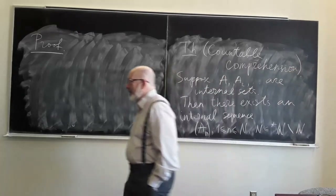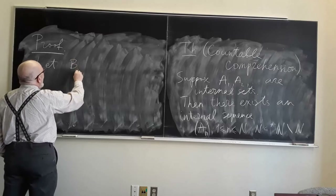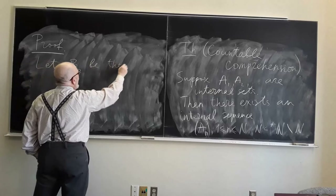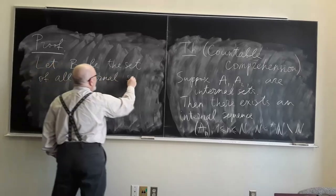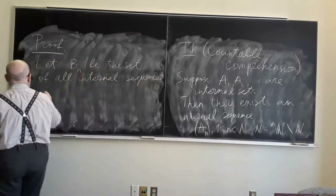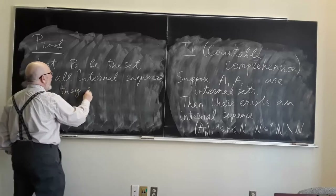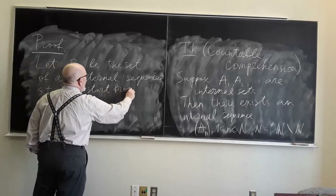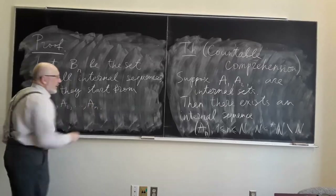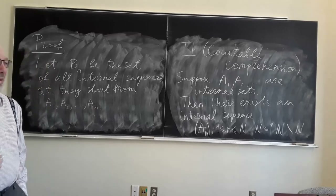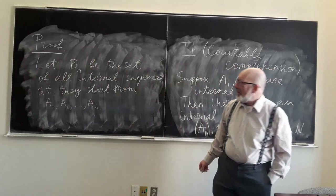If you take the first k terms A₁, A₂, ..., Aₖ and then repeat them periodically, this defines: let Bₙ be the set of all internal sequences that start from A₁, A₂, ..., Aₙ — all internal continuations of this finite-length-n initial segment. All these sets Bₙ are non-empty.